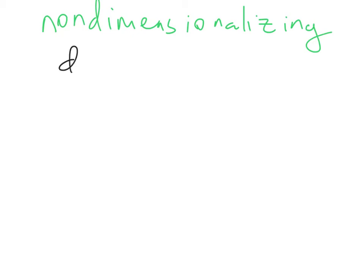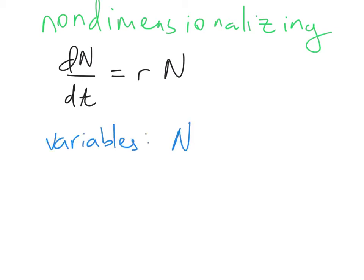So our simple one is dN/dt equals rN. The variables are N and t, and the parameters are r.